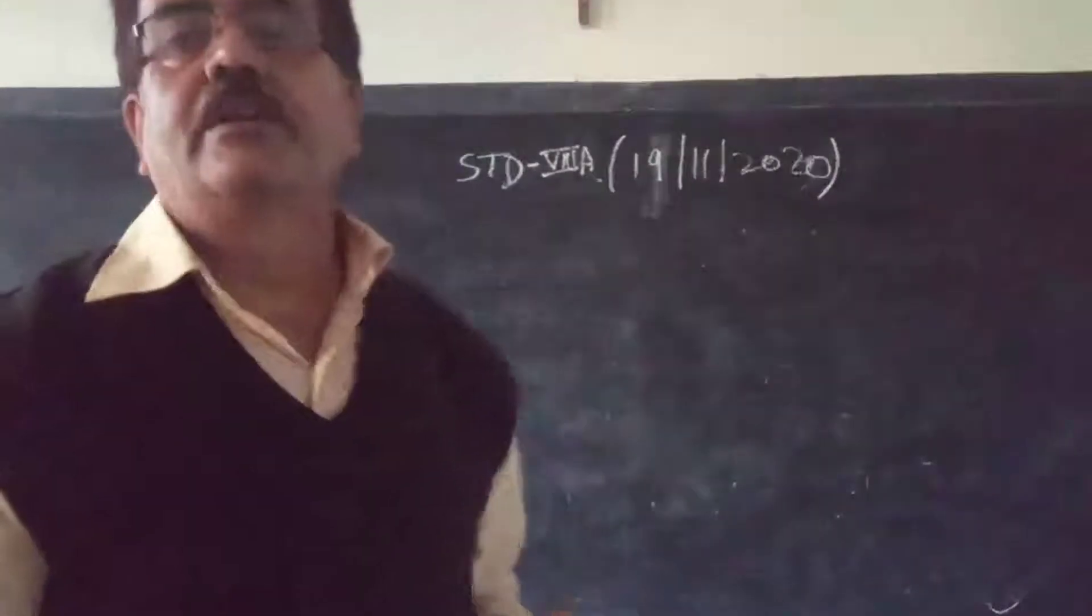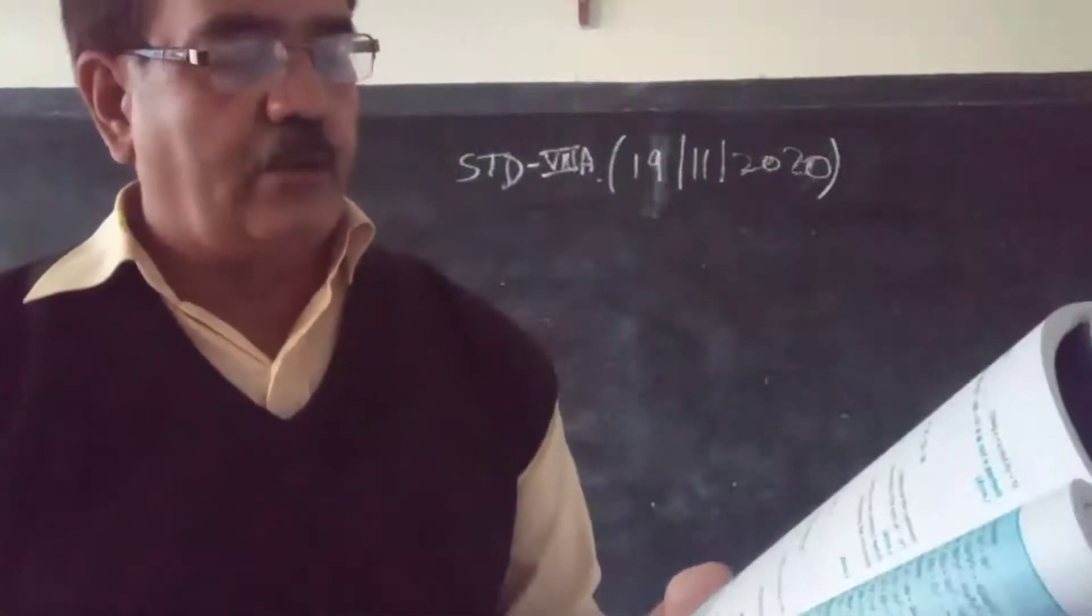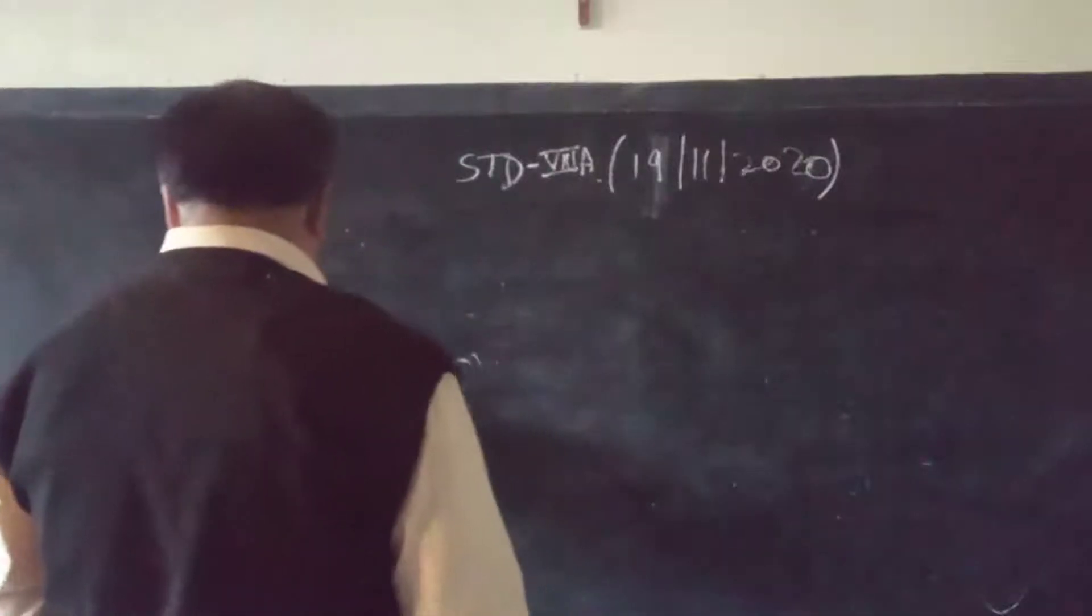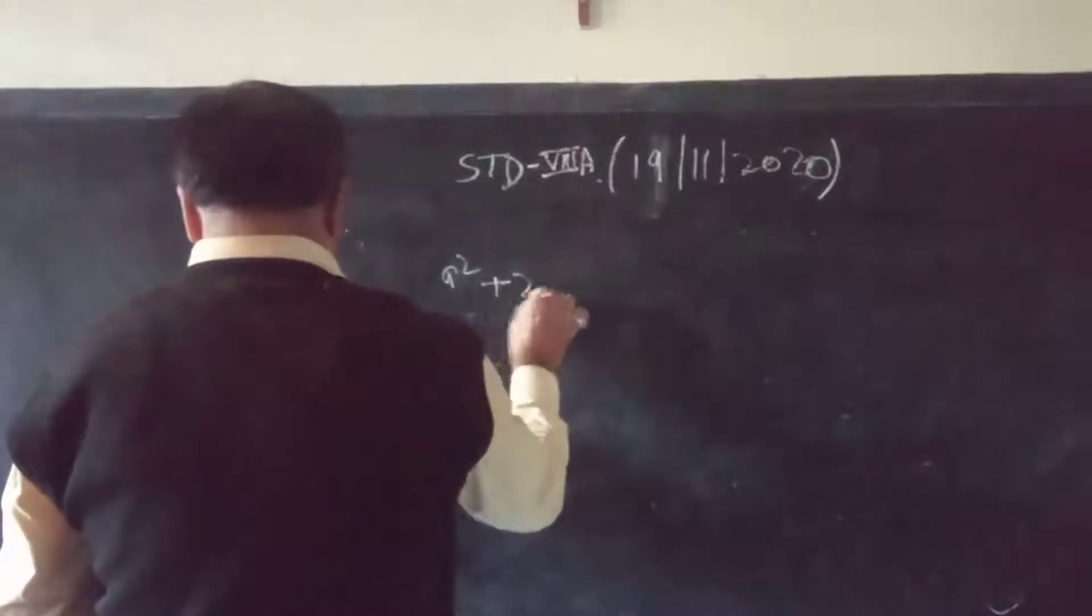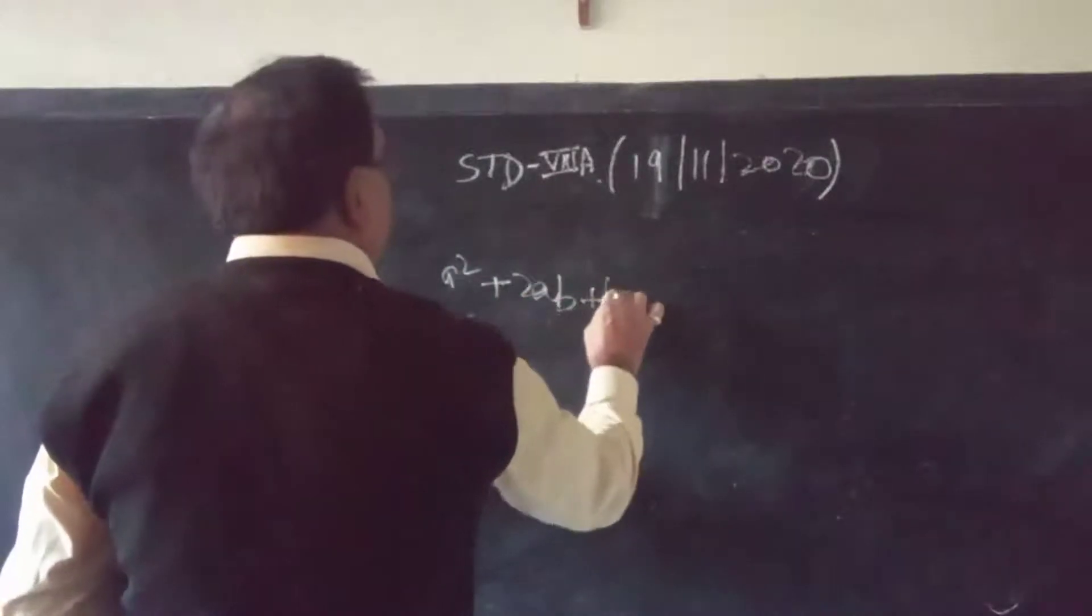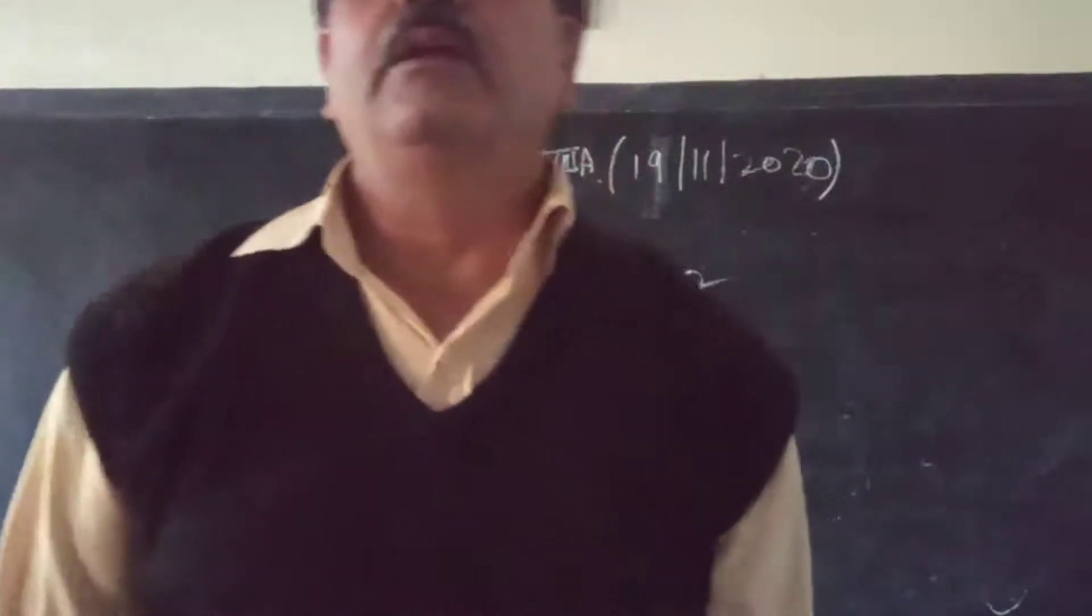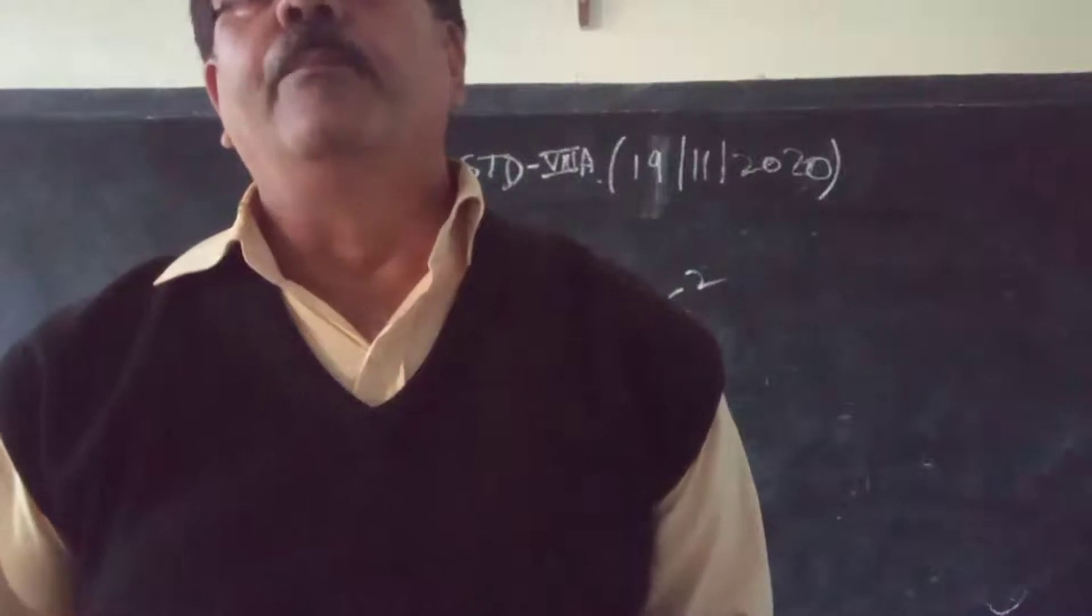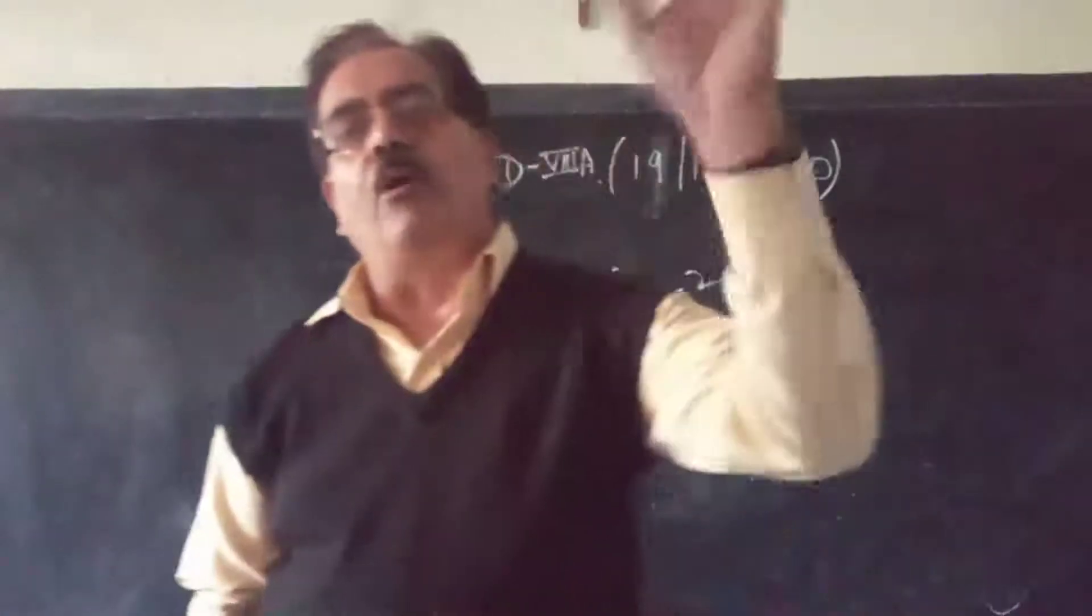Good morning guys, today I am going to solve some more questions from exercise E and F. So see my first question: A squared plus 2AB plus B squared minus C. As I asked you earlier, this exercise E and F is based on mixed portions from all the exercises.